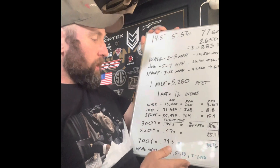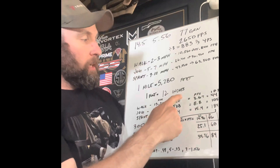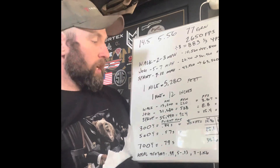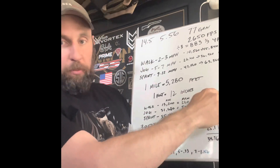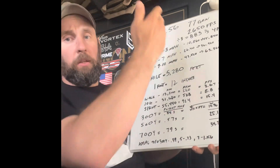For walking, we end up with 13,200 feet per hour average, which equals 220 feet per minute, which equals 3.67 feet per second, which equals 44 inches per second. Do the same conversions for jogging and sprinting — going from feet per hour, to feet per minute, to feet per second, to inches per second — and you end up with 44, 105, and 184 inches per second respectively.